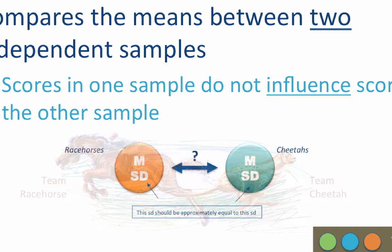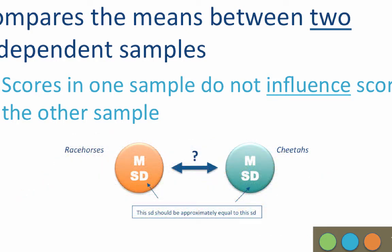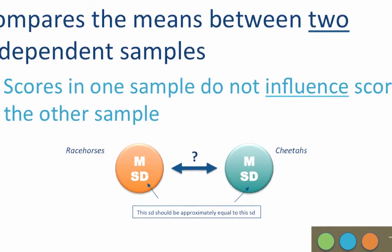But in our cheetahs versus racehorse example, each sample group would have a mean, and each group would have a standard deviation. It will be important for our t-test that the standard deviations are approximately equal. They do not have to be the same, but they need to be close enough. And how do you know if they are close enough? We will test them with something called a Levene's test. More on that later.